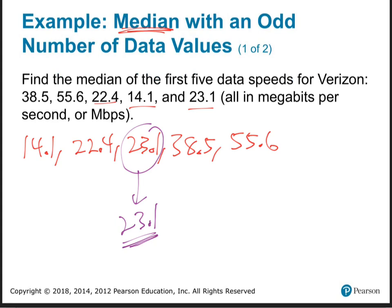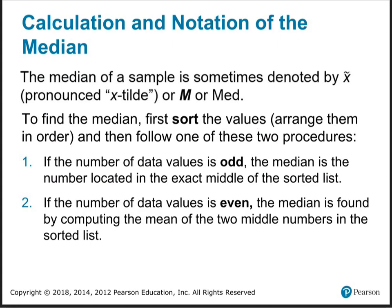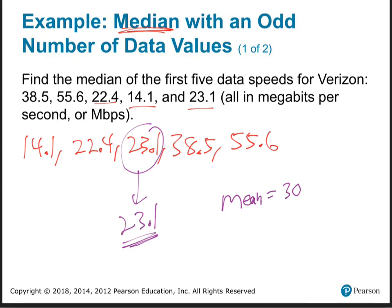Now compare: the mean was 30.74 on the same data, and the median was 23.1. They're both ways of finding the middle — the average — but the mean was a lot higher because it was pulled up by that large value of 55.6.